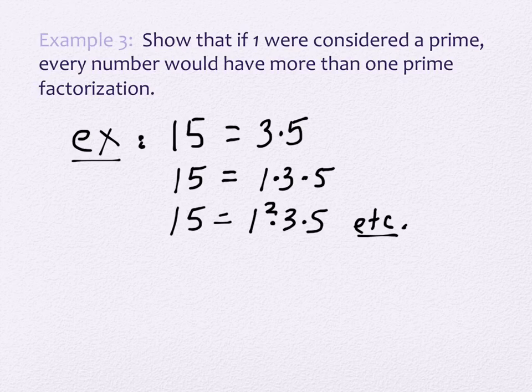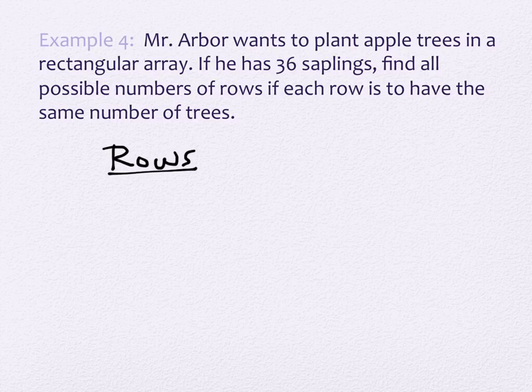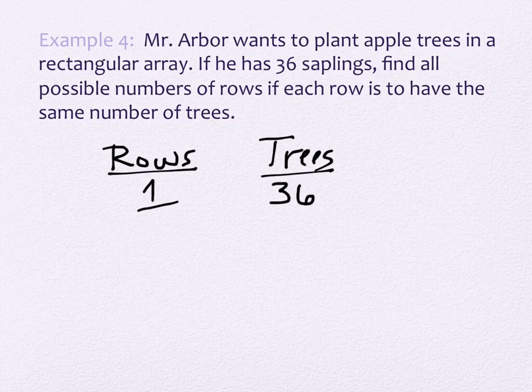Our next example is going to show how we can think about these factors occurring in pairs. Mr. Arbor wants to plant apple trees in a rectangular array. If he has 36 saplings, find all the possible numbers of rows if each row is to have the same number of trees. We could have one row with 36 trees. What would be the next option? Two rows with 18 trees. What else could we have? Three rows with 12 trees.